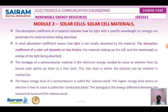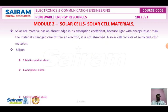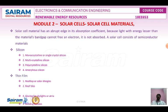Solar cell materials have an average edge of the absorption coefficient: light with energy less than the material's band gap is not absorbed and free electrons cannot be generated. Solar cells consist of semiconductor materials. The available materials include silicon and thin films. Silicon remains the most popular material, and there are four types: monocrystalline (single crystalline), multicrystalline, polycrystalline, and amorphous silicon.